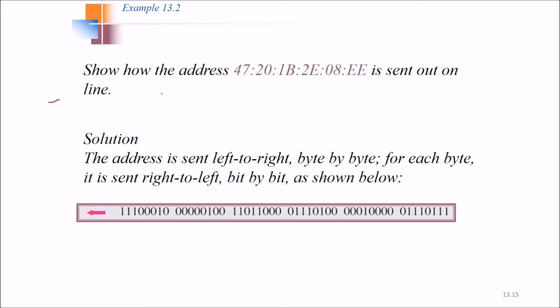Now next is to show how the address is sent out online. How it is sent online? The address is sent left to right, byte by byte. For each byte, it is sent right to left. The address is sent from left to right, byte by byte, and for each byte it is sent right to left, that is, bit by bit. This is how it is done.